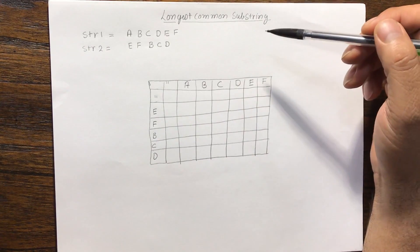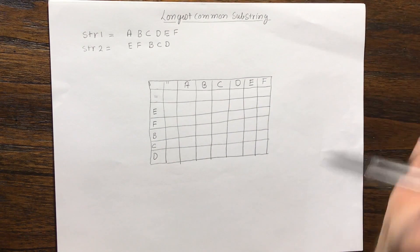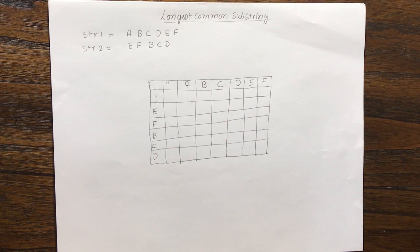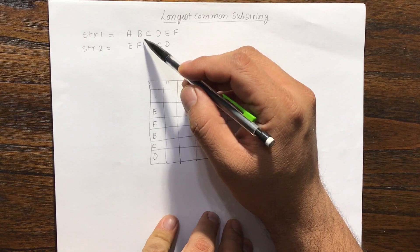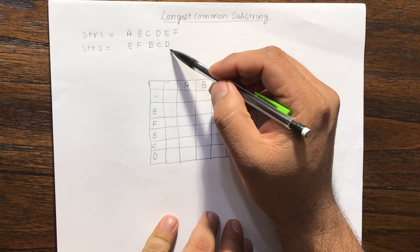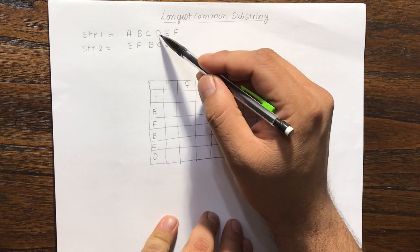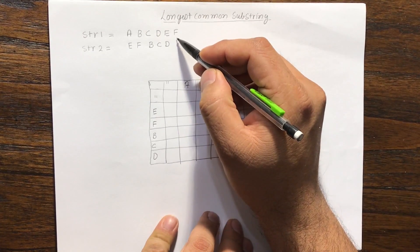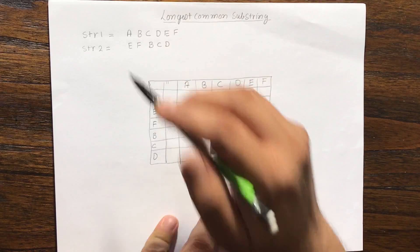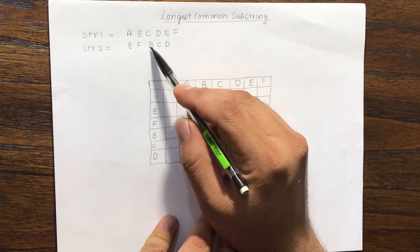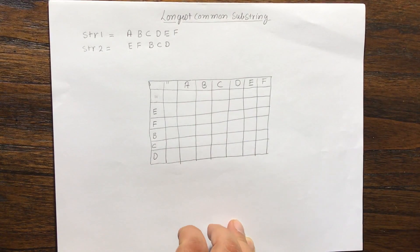Next we'll discuss a problem called longest common substring and we'll solve it using dynamic programming. The longest common substring between two strings - if we take string 1 and string 2, we can see that there is a substring bcd in string 1 and bcd in string 2 also. There's another common substring ef and ef. But the longest common substring is bcd. We have to find the longest common substring, which is bcd, or the length of the longest common substring.